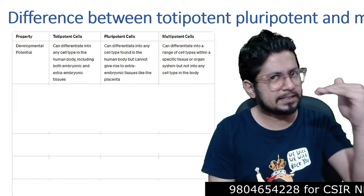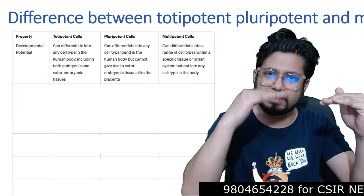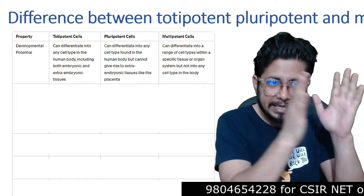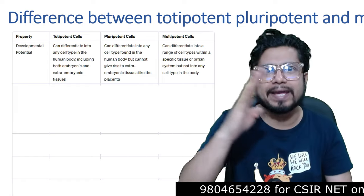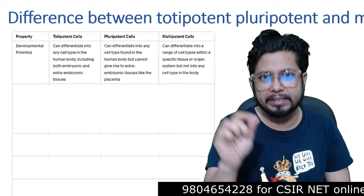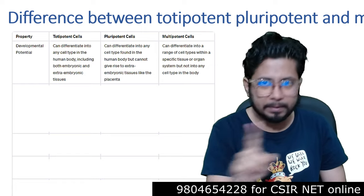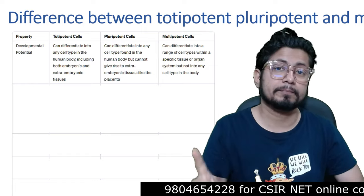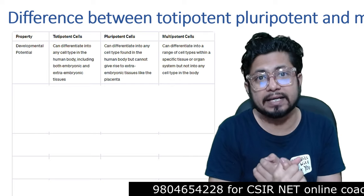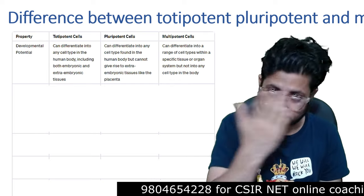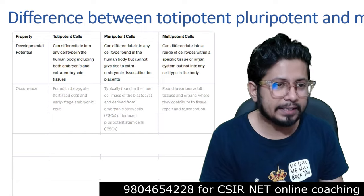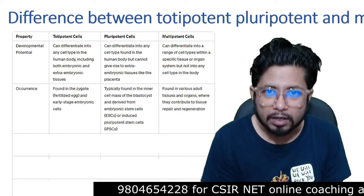So you have totipotent — maximum potency — then pluripotent, then multipotent. TPM. That's how you need to remember it. TPM — remember that in your brain.